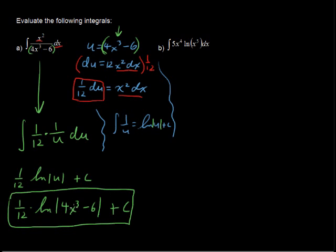And that absolute value has to do with, you know, you can't take the natural log or you can't take a logarithm of a negative number. So that's why we have to put the absolute value bars there.